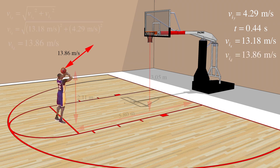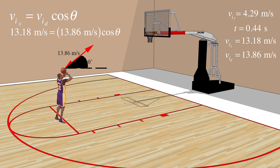Finally, using all the data we have calculated, we can find the angle at which Dwight must throw the ball. We can use the formula: velocity initial in the x direction equals velocity initial in the diagonal direction times the cosine of theta. Plugging in our known values to find theta, after solving, we find that theta is equal to 18.02 degrees.